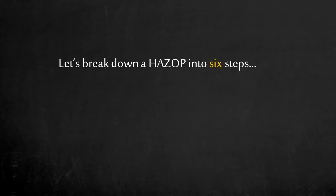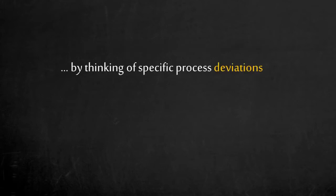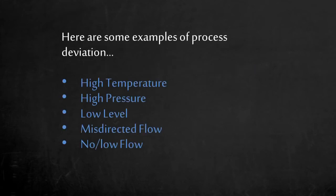Let's break down a HAZOP into six steps. Step 1: Identify the risk by asking what can cause a hazardous event. This can be overwhelming since a process can have thousands of causes for hazard. The risk identification process can be made more systematic by thinking of specific process deviations — for example: high temperature, high pressure, low level, misdirected flow, no flow, or slow flow.